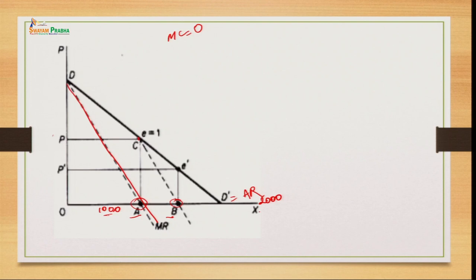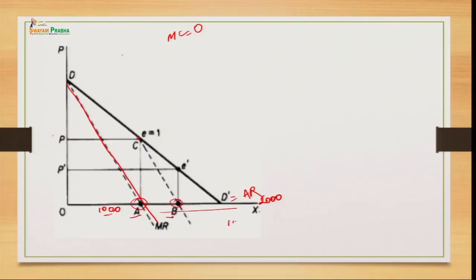When firm B enters the market, firm A is already producing 1,000 units — half of the market demand. Firm B assumes firm A will continue its production and enters with the remaining demand of 1,000 units, further producing half of that remaining demand. Firm B's demand curve starts from the point where firm A's captured demand ends. The marginal revenue curve for firm B is derived from this remaining demand, giving firm B its equilibrium output and price.